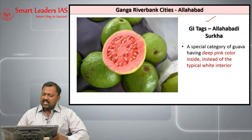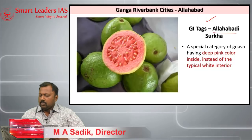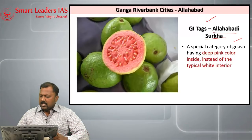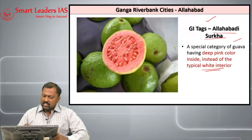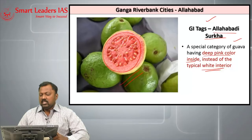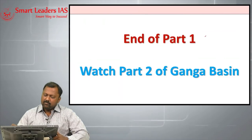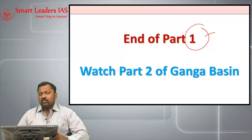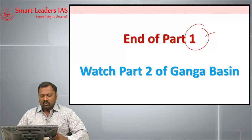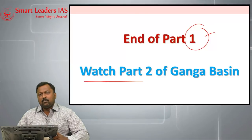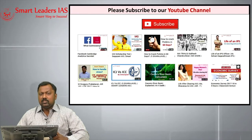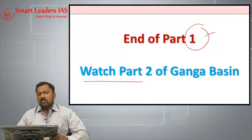The GI tag associated with Allahabad is Allahabadi Surkha, a special variety of guava. Unlike traditional guava which has a white interior, this guava has a deep pink color inside and is very tasty, which is why it received a GI tag. This brings us to the end of part one of our Ganga river basin series. Please watch parts two, three and four as we upload them, and also watch our other videos on the Cauvery and other historical topics. Thank you for watching.